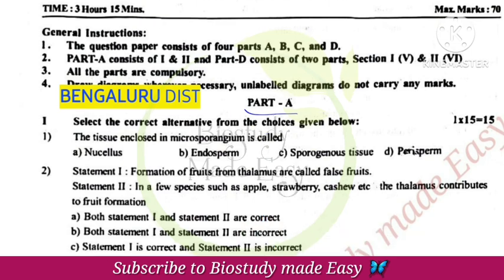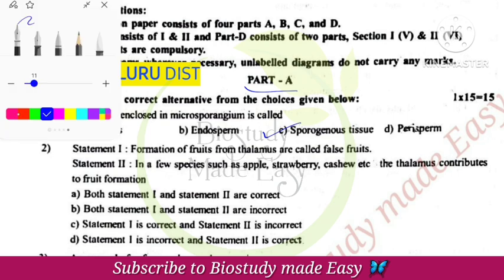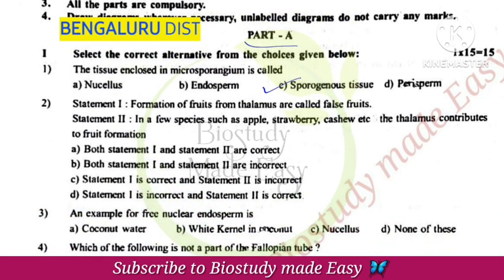The tissue enclosed in microsporangium is sporogenous tissue. Formation of fruits from thalamus are called false fruit.